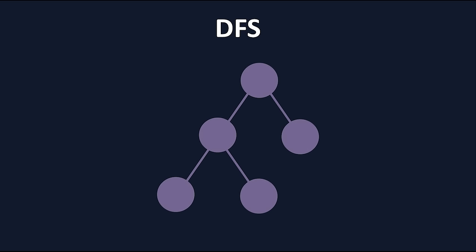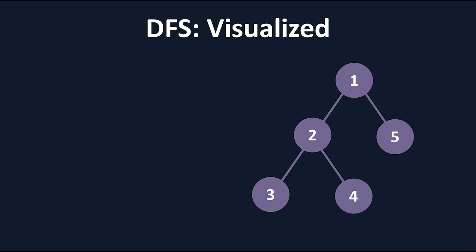The idea with DFS is to start at the root node and go as far down one branch as possible, all the way to the end. Once we hit the deepest point, which is where the depth part of DFS comes from, we come back to an unvisited branch and go down that one. This process of coming back to an unvisited branch is called backtracking. Here's a visual demonstration of how we might traverse through this graph using DFS.